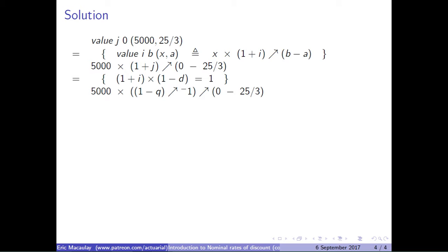So j is the rate of interest per quarter compounded quarterly, whereas Q is the rate of discount per quarter compounded quarterly. And so if i is j and d is Q, this formula applies. Let's simplify this.